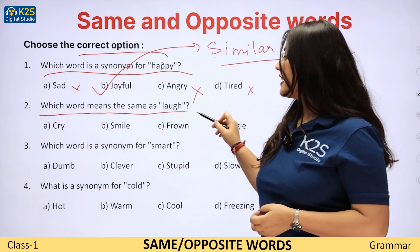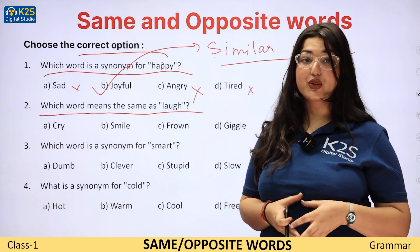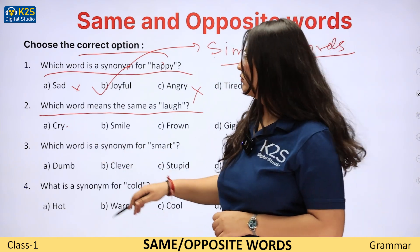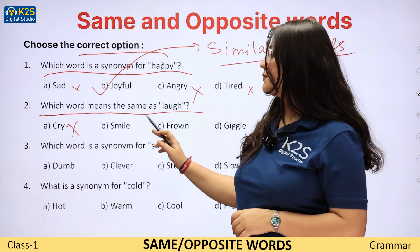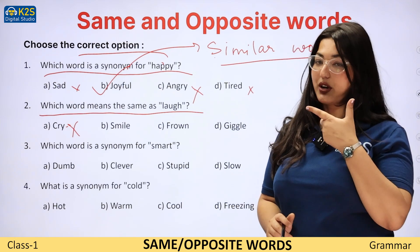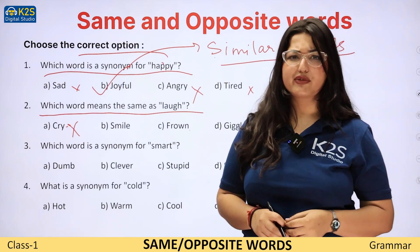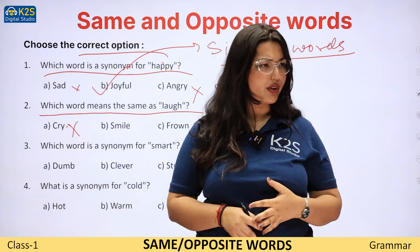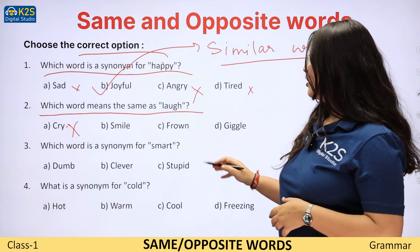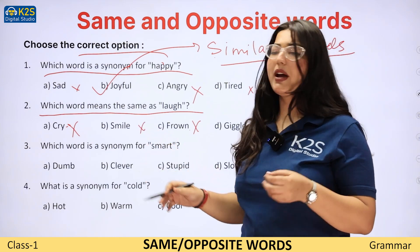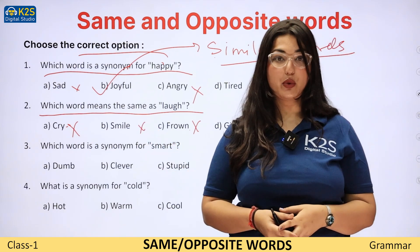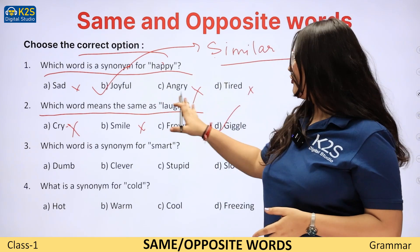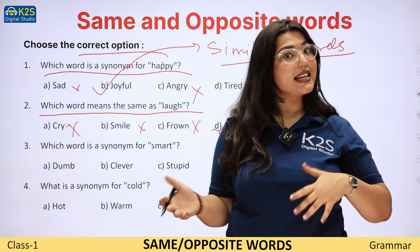Which word means the same as laugh? Cry — no, is ka matlab to rona hota hai. Smile — muskurana? Frown — when you are making faces at someone, gusse se dekhna, that's also wrong. Smile mein bhi aap sirf normal smile karte ho. Lekin giggle — giggle jab aap khil khila kar haste ho. So laugh and giggle bilkul same hain.